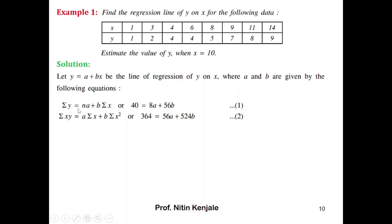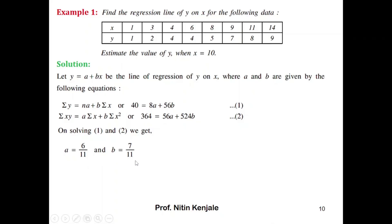We take y equals a plus bx as the line of regression y on x, where a and b are constants. Taking summation on both sides gives equation 1: summation y equals n·a plus b times summation x. Here n equals 8 (there are 8 data values) and summation x equals 56, so equation 1 becomes 40 equals 8a plus 56b. Multiplying by x and taking summation gives equation 2: summation xy equals a times summation x plus b times summation x squared. Substituting the known values gives us equation 2. We solve equations 1 and 2 simultaneously for a and b.